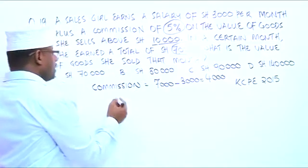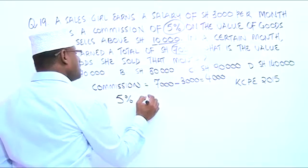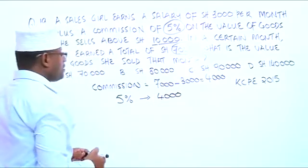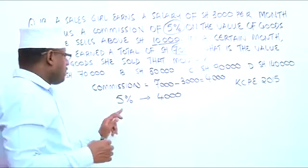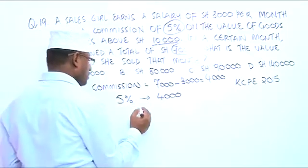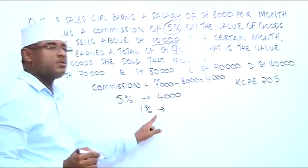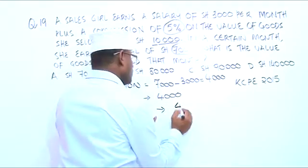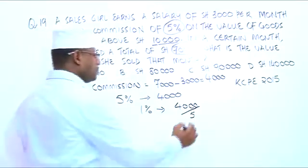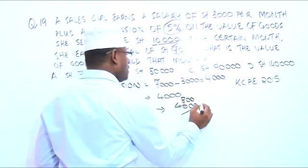So if 5% is $4,000, what about 1%? It will be $4,000 divided by 5. So 1% is $800.